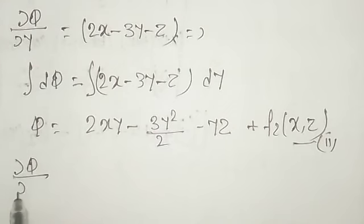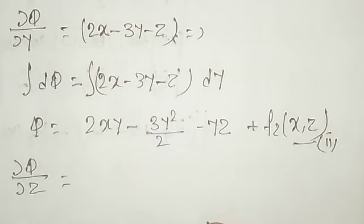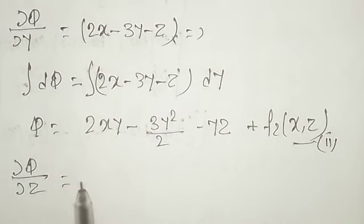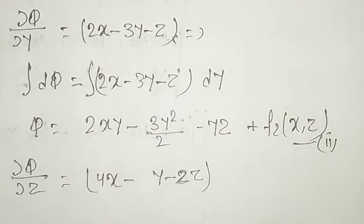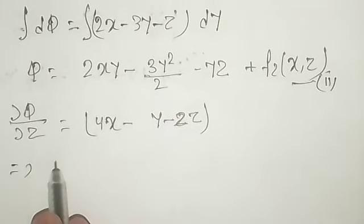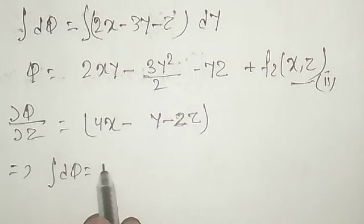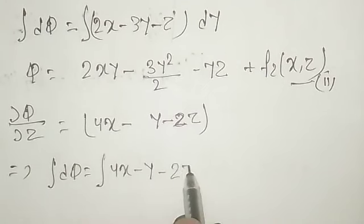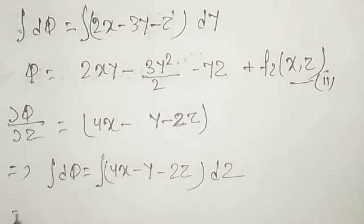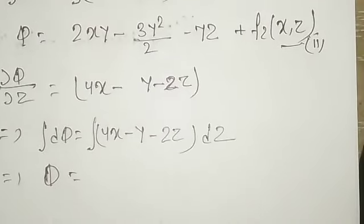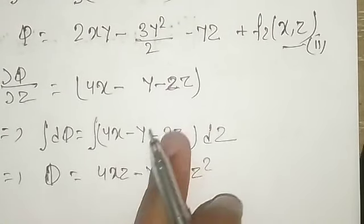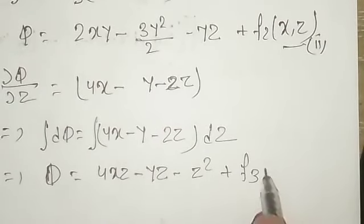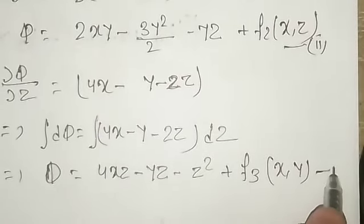Comparing the k-coefficients: ∂φ/∂z = 4x − y − 2z. Integrating with respect to z: φ = 4xz − yz − z² + f₃(x, y), where f₃ is a function of x and y. This is equation 3.